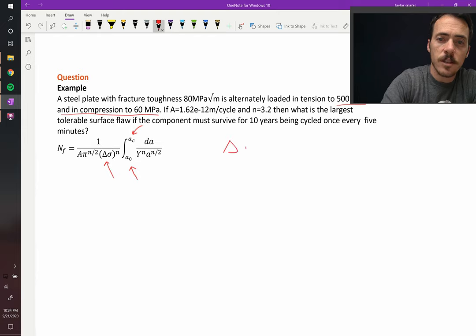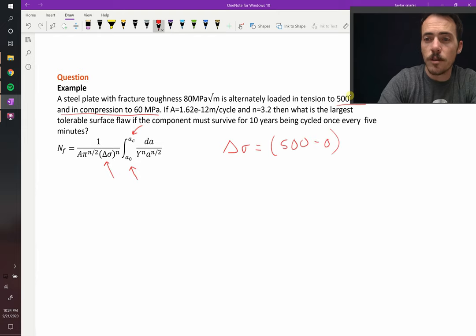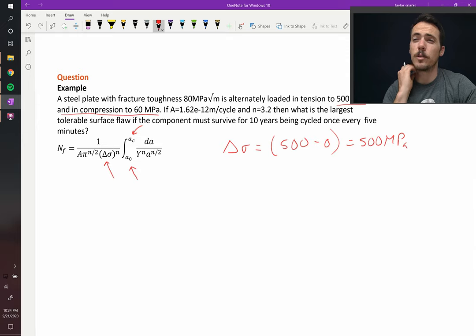So delta sigma is going to be equal to 500 minus, we're going to ignore tension so it goes down to zero, so it's equal to 500 MPa. Remember in this class we're assuming that cracks don't grow under compression, only tension, so the range is 500 MPa.